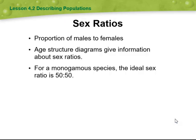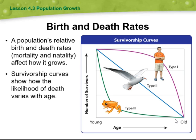Then we have sex ratios — the proportion of males to females. Age structure diagrams give information about sex ratios, which is technically the gender ratio. For a species, the ideal sex ratio is 50 to 50, meaning equal proportions of males and females.